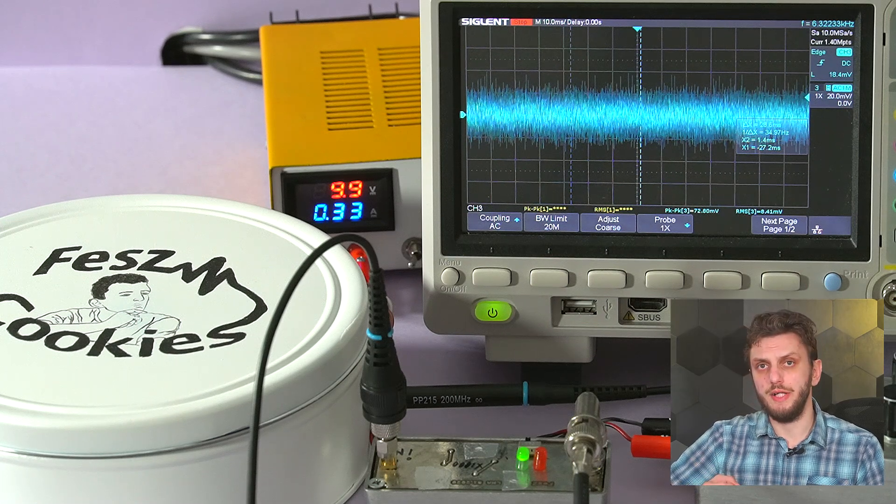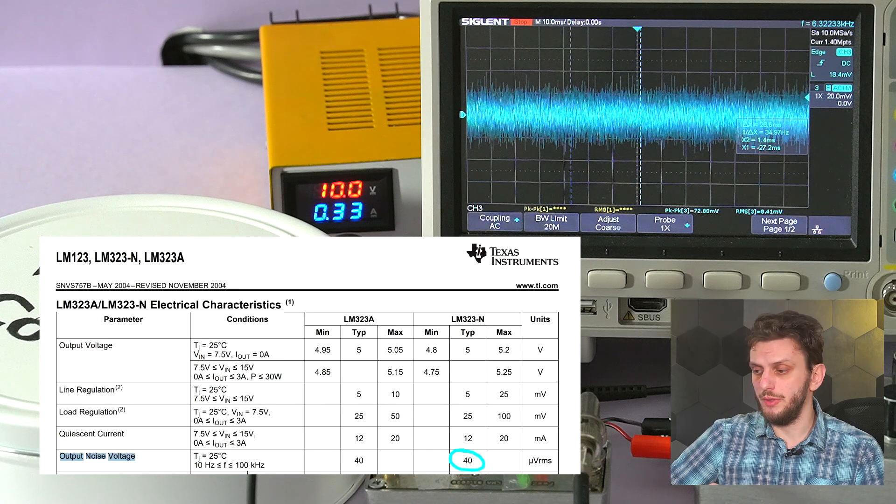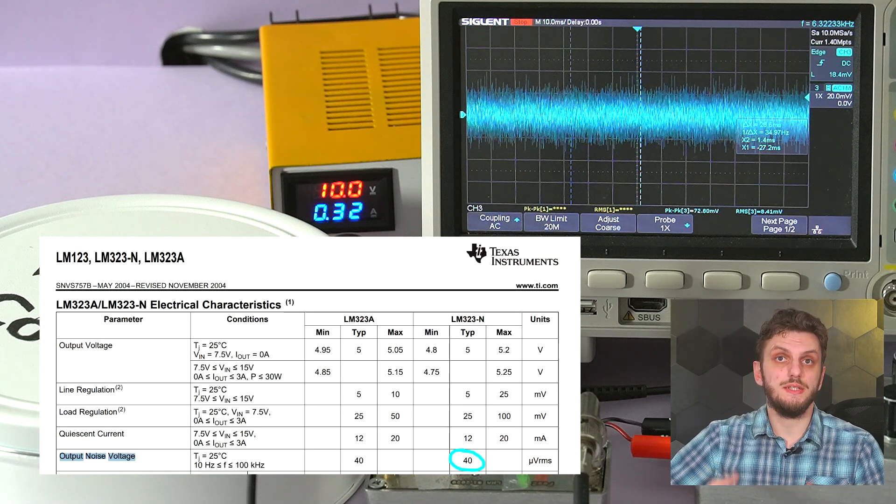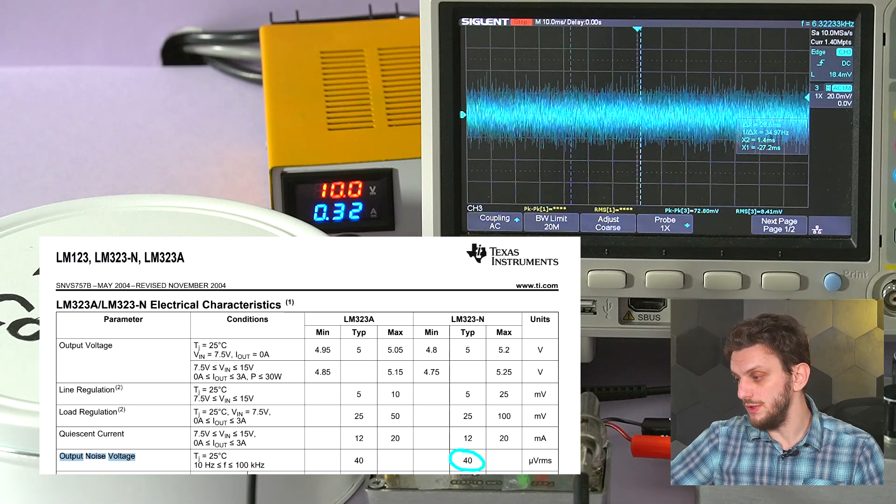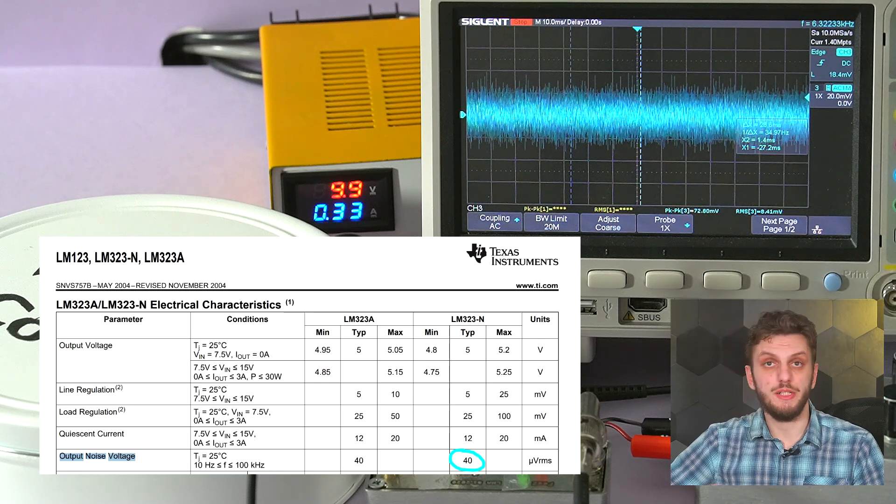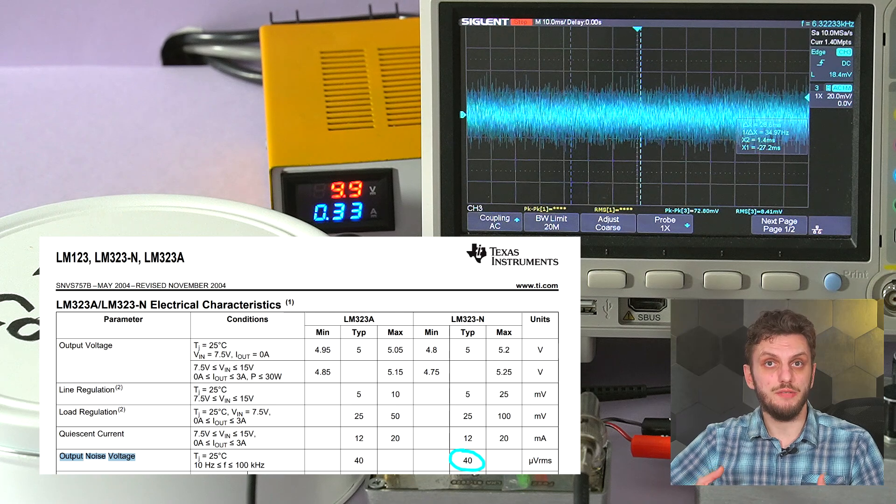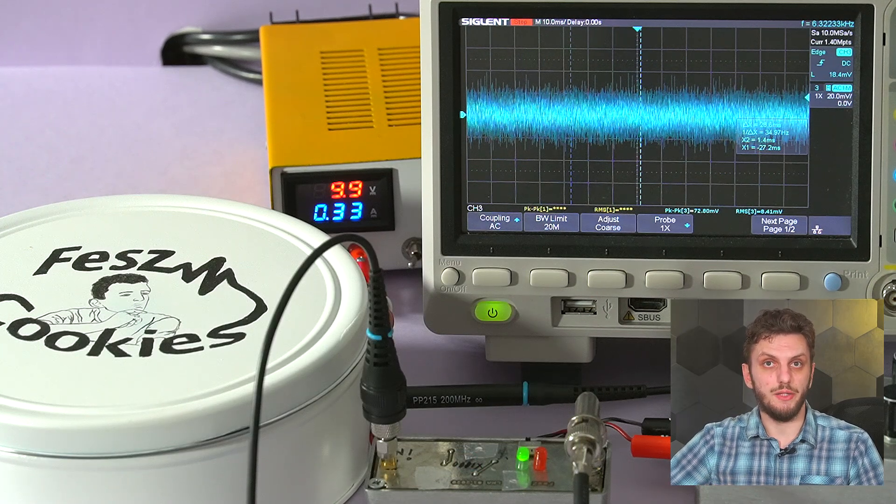Now is this value good or bad? Well, for this particular power supply, the datasheet gives us a typical value of 40 microvolts RMS. So with this measurement, we can say that the power supply is working very well, and the noise level is nicely below the datasheet typical value.